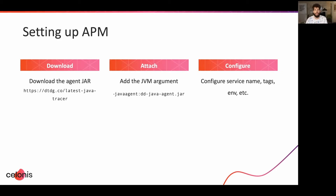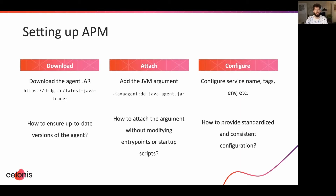When offering observability as a service to other engineering teams, like our platform team does, we want to make things as easy as possible to set up and keep configuration consistent across all environments and applications. Coming back to those three tasks, this raises three questions: how do we ensure up-to-date versions of the agent? How do we attach the agent without modifying any entry points? And how do we provide a standardized configuration? Let's tackle these one by one.